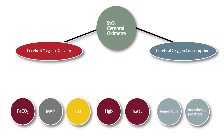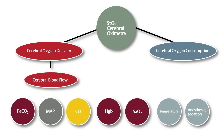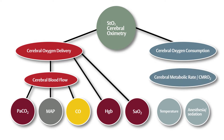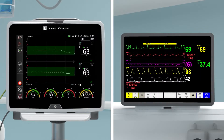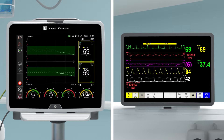Cerebral Oxygen Delivery and Consumption. Cerebral oxygen delivery is affected by cerebral blood flow, hemoglobin, and oxygenation. Cerebral blood flow is affected by PaCO2, MAP, and cardiac output. Cerebral metabolic rate, commonly referred to as CMRO2, indicates oxygen consumption of the brain and is affected by both temperature and anesthesia. Monitoring STO2 values can provide insight into potential imbalances between cerebral oxygen delivery and consumption.